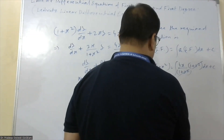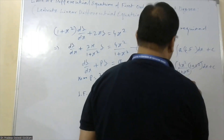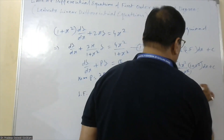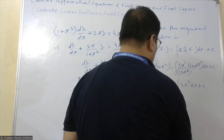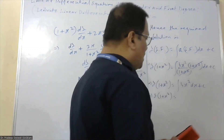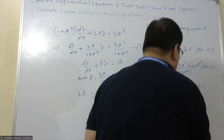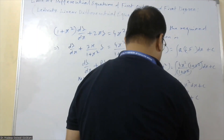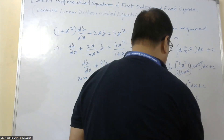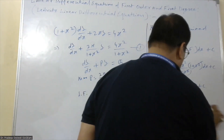So y(1 + x²) equals integration of 4x² dx plus C, which gives y(1 + x²) equals 4x³/3 plus C. This can be written as 3y(1 + x²) equals 4x³ plus C. This is the required solution of the given differential equation.